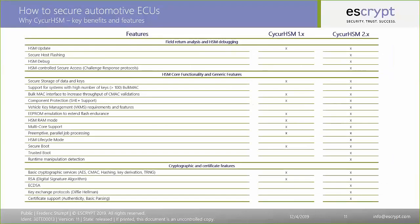We currently have two HSM versions. The current generation is 2.x, which we are constantly enhancing. There is also CYC 1.x, which is still actively supported and long-term maintained. There are still projects starting with 1.x, which was designed for specific OEM requirements. The main difference when we introduced 2.x was a variant management system to ensure we can configure the HSM much more flexibly — adding, activating, or deactivating features to be much more flexible.